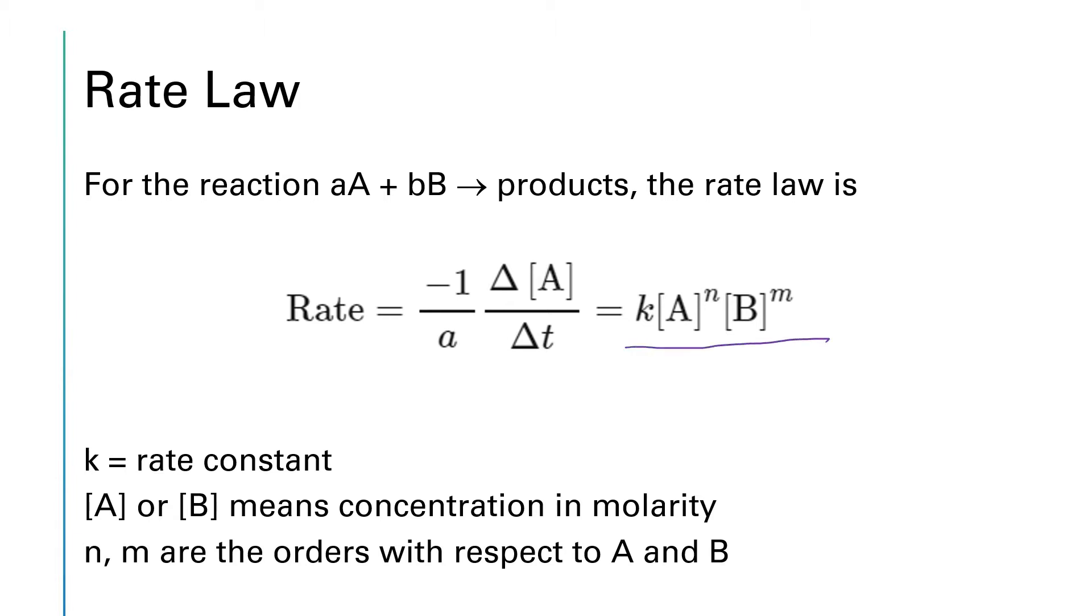k times A raised to the nth times B raised to the mth power. So k is what's known as the rate constant. In the next chapter we're going to look at something called an equilibrium constant which is also a K. So from the beginning with rate laws I want to advise you to use a lowercase k for this. With my handwriting the only way I can distinguish lowercase from uppercase is with cursive, so I always make my rate constants a lowercase cursive k and then I save my capital printed K for the equilibrium constant.